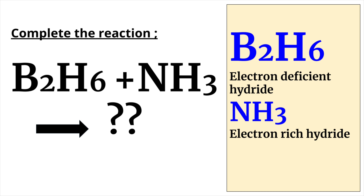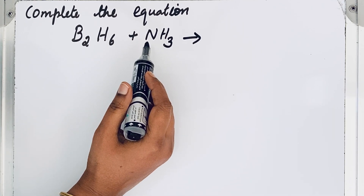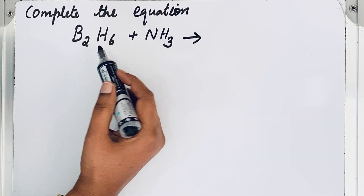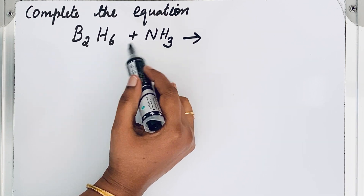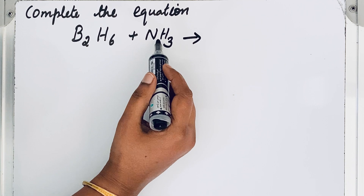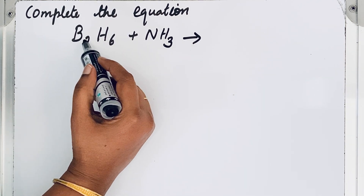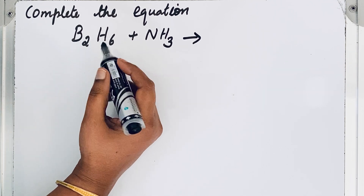Welcome to Aurora Chemistry for Everyone. Let us analyze how to find the product when diborane reacts with ammonia. Both diborane and ammonia are hydrides — diborane is an electron-deficient hydride and ammonia is an electron-rich hydride. So whenever they react, the electron-rich ammonia tries to give its electrons to the electron-deficient diborane.